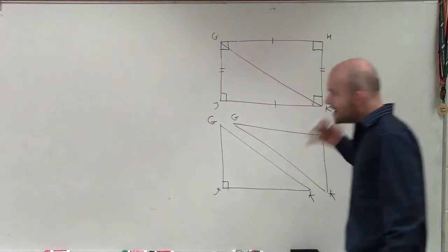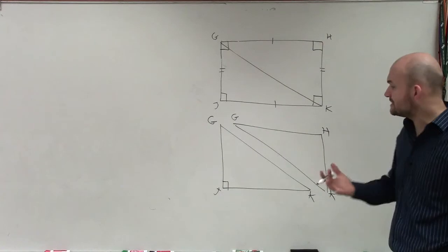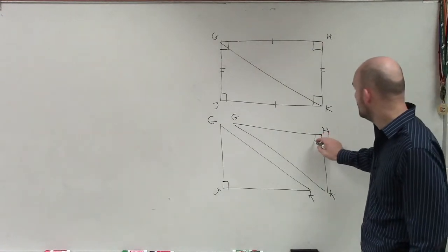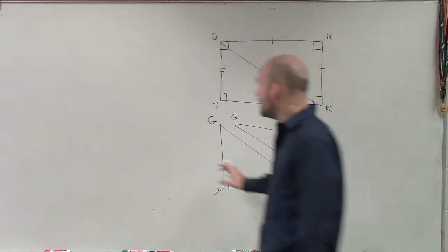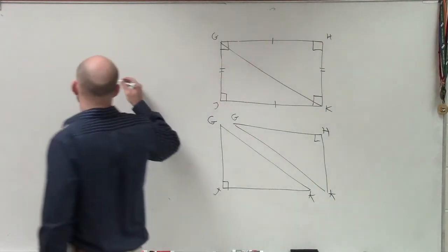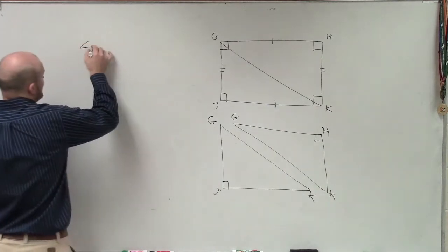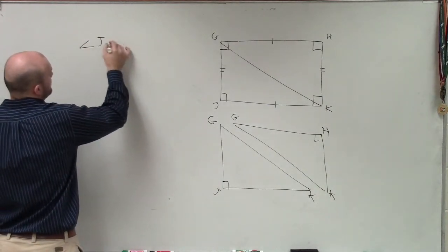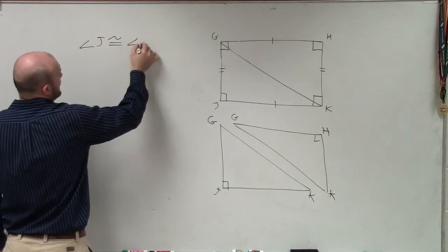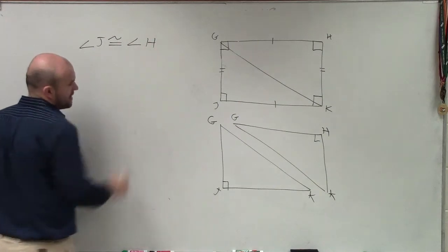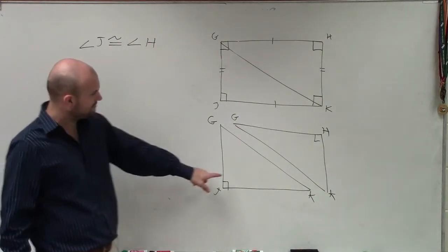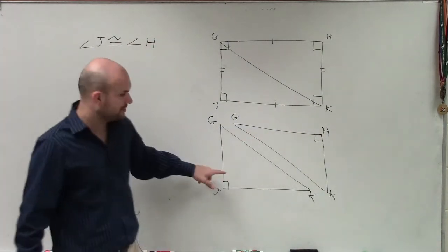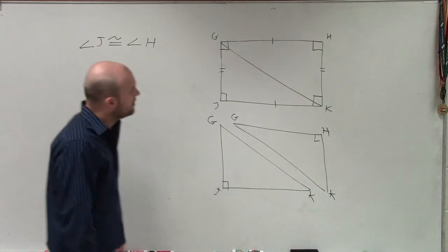What that does is it allows us to kind of see what angles are congruent to what angles. Now, I'm going to do this in two different ways. You can write it as angle J is congruent to angle H. We know that because they both have their 90 degree angles.